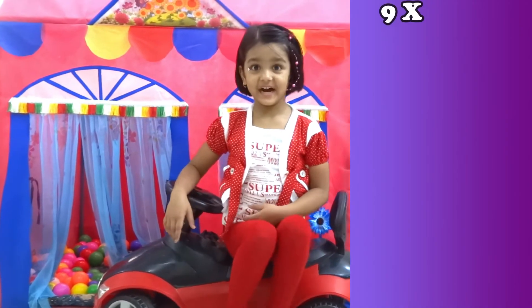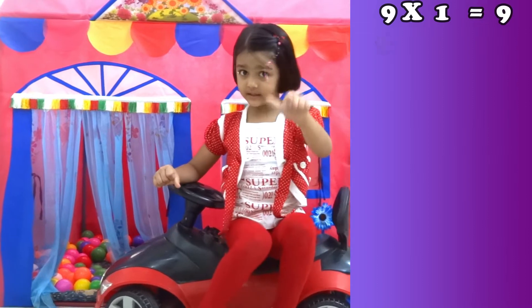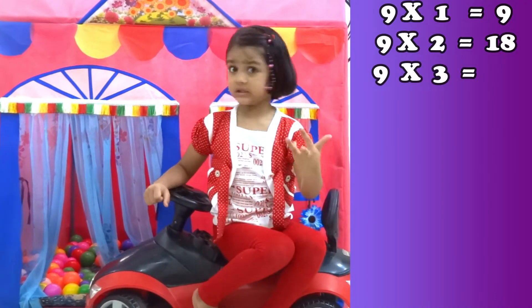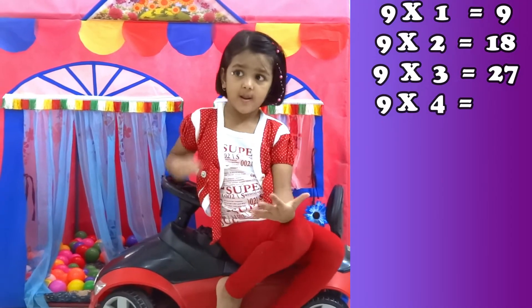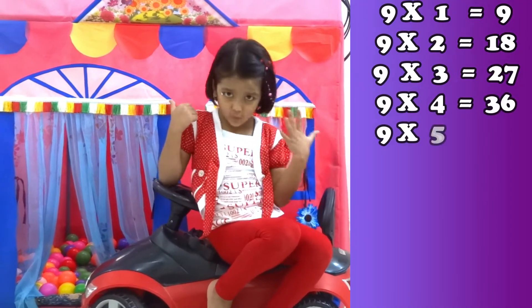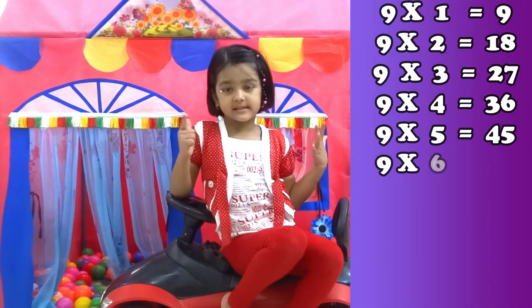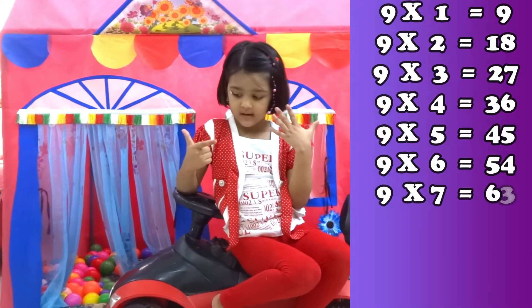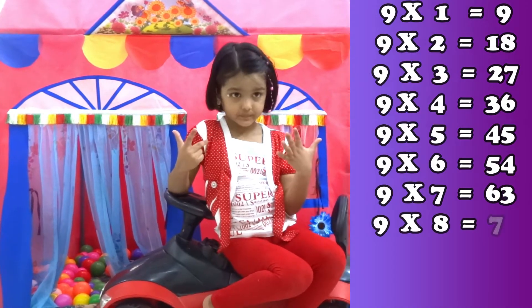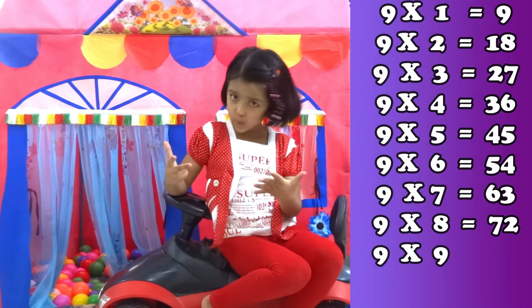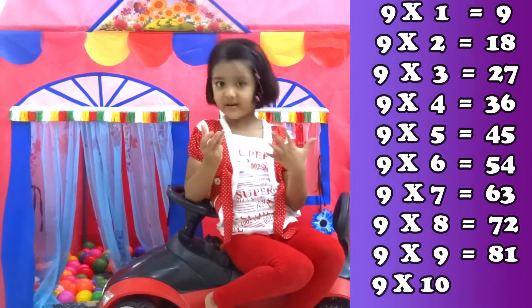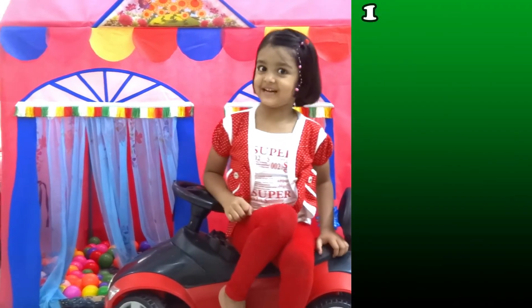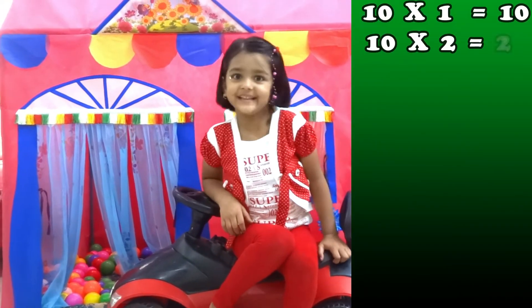9 one's are 9, 9 two's are 18, 9 three's are 27, 9 four's are 36, 9 five's are 45, 9 four's are 36, 8 three's are 50, 9 six's are 54, 9 seven's are 63, 9 eight's are 72, 9 nine's are 81, 9 ten's are 90.